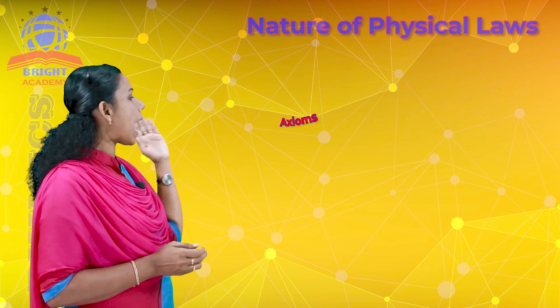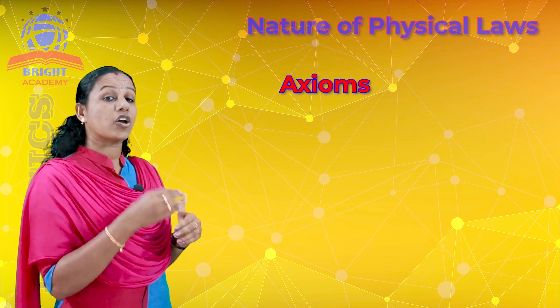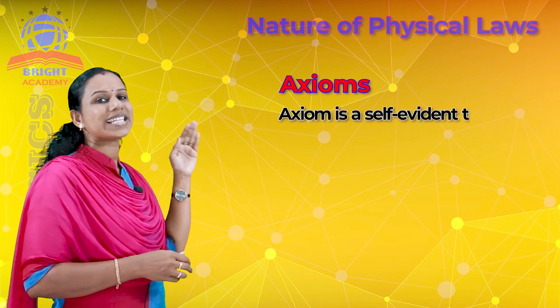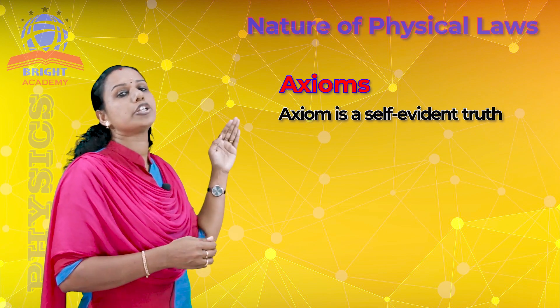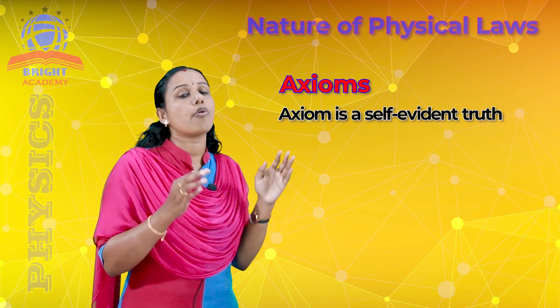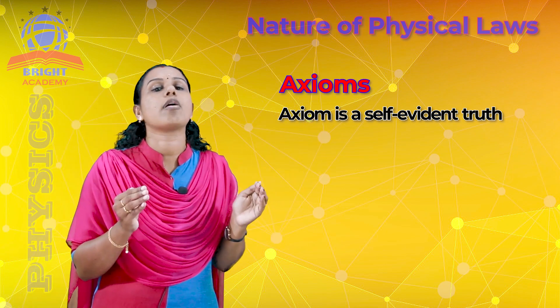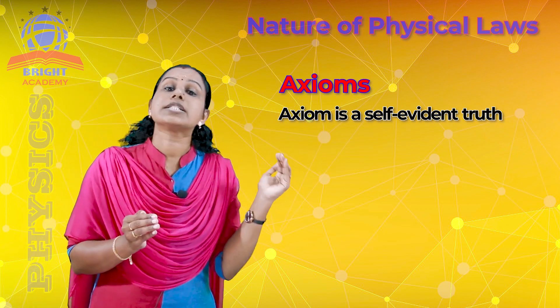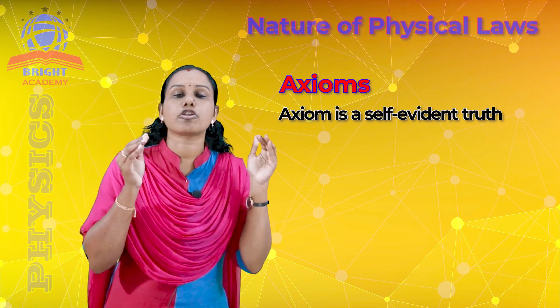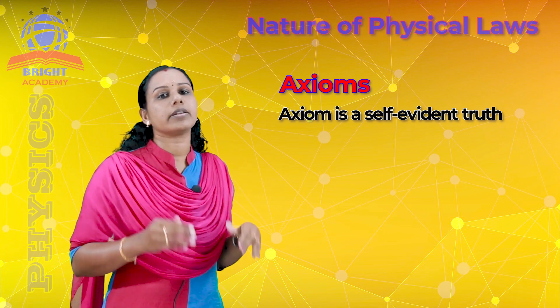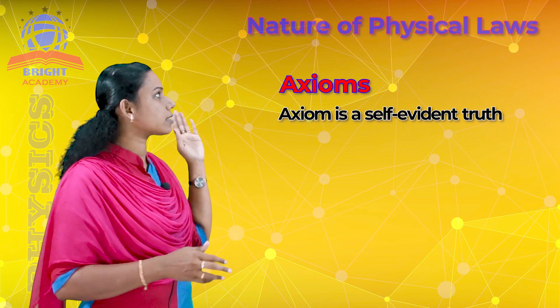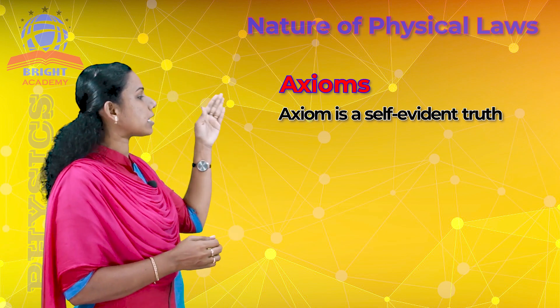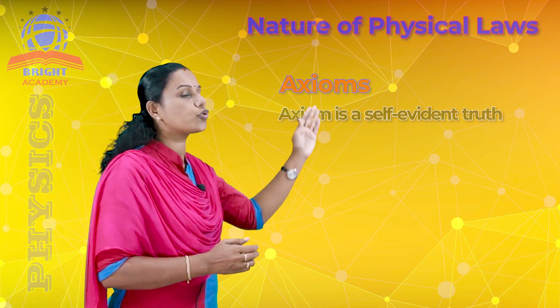Next is axiom. Axiom means it is a self-evident truth. That particular phenomenon is accepted as true. Axiom means a self-evident truth.